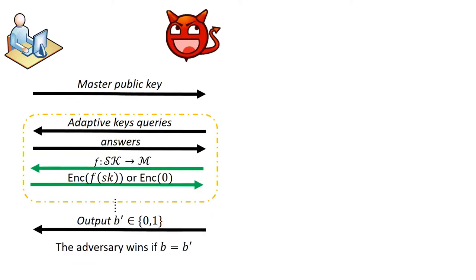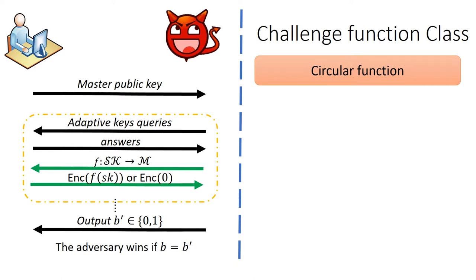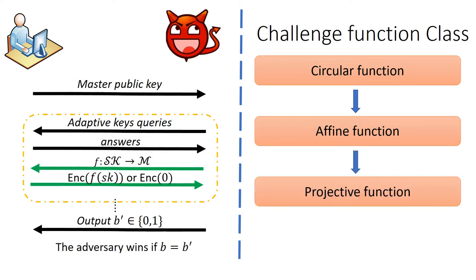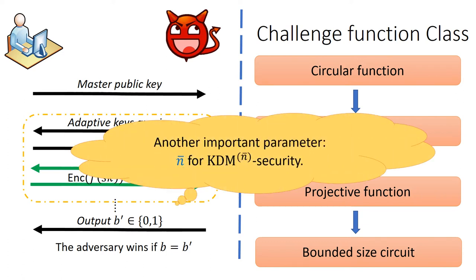In this formal definition, the class of function F chosen by the adversary is an important parameter of KDM security, called the KDM challenging function class. Clearly, the larger the challenge function class, the stronger the ability of the adversary. We have tried to enlarge the KDM function class from scalar functions to affine functions, then to projective functions, and general bounded-size circuits. Besides, there is also another important parameter: the number n-bar of different public keys in the security game. In the more general case, we call this KDM n-bar security.